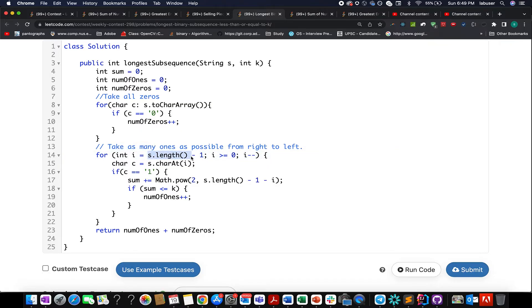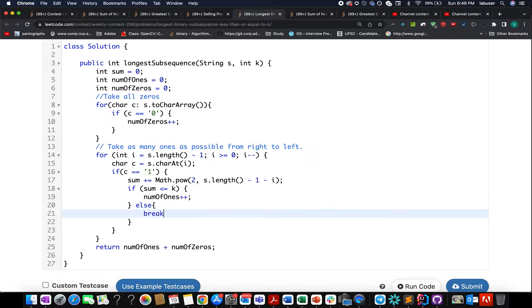We will be iterating in right to left fashion, from the least significant bit to the most significant bit. We extract the character one by one, check if it equals 1, then calculate its weight in decimal and add it to the running sum. If the running sum is less than or equal to K, I increment the number of ones count variable, otherwise I break.